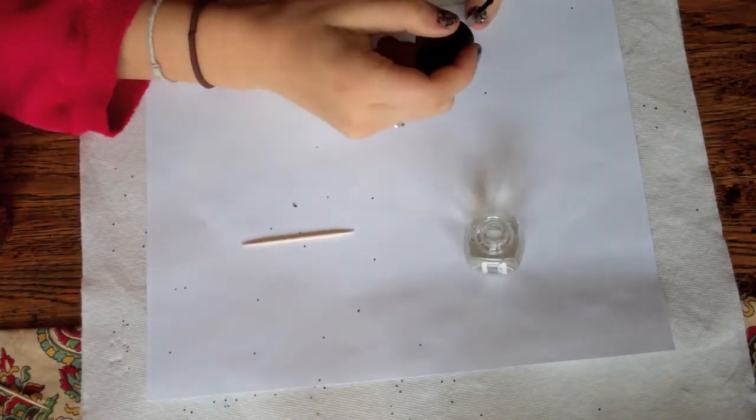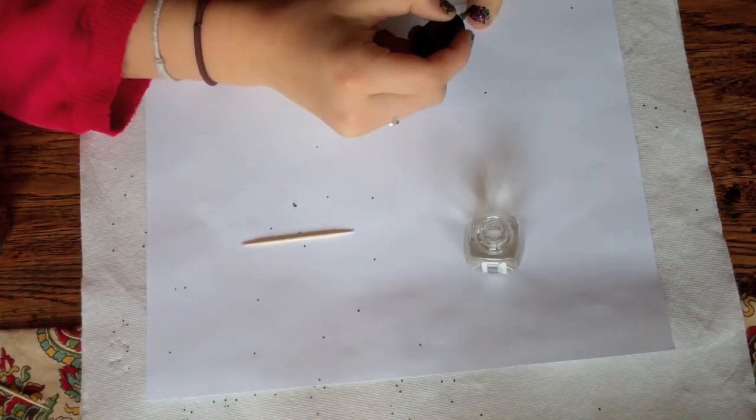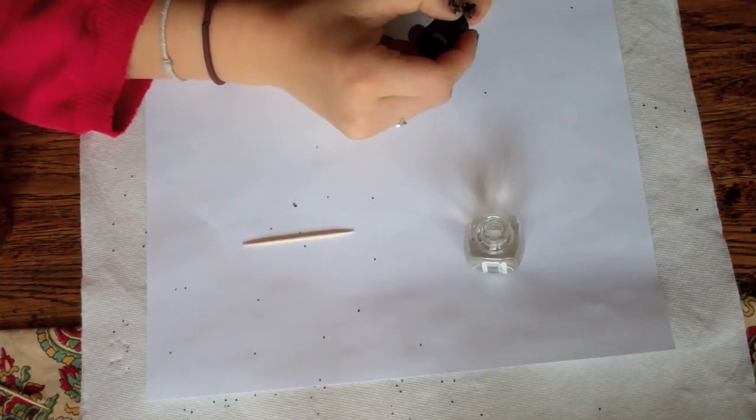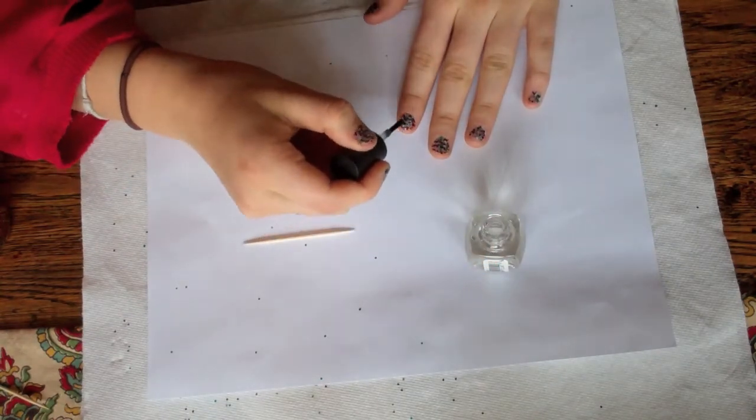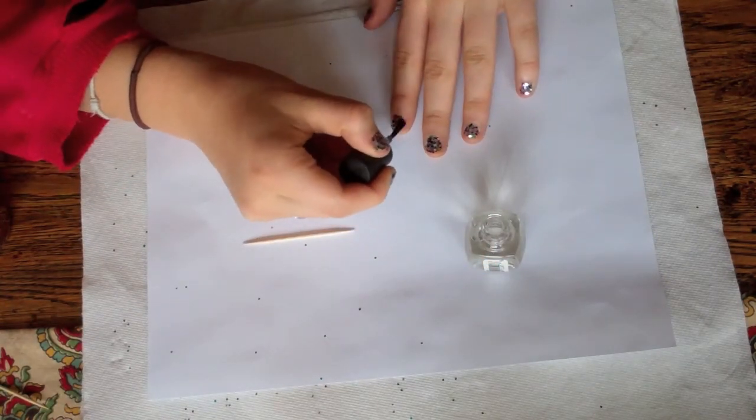Try not to drag your brush too much. If you end up getting some glitters on the brush and you don't want that going back into the nail polish, you can just wipe it off on your paper towel or piece of paper.